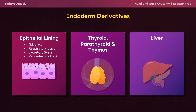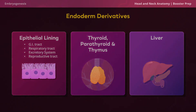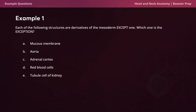Now you're going to have to prove you were listening with example question one. Each of the following structures are derivatives of the mesoderm except one — which one is the exception? The mucous membrane, the aorta, the adrenal cortex, red blood cells, or tubule cell of the kidney. Recall that the mesoderm derivatives are the circulatory system, the lymphatic system, the skeletal system, the muscular system, the adrenal cortex, and the notochord. Mucous membranes are epithelial linings that are both endoderm and ectoderm derivatives. Therefore, the correct answer is A.